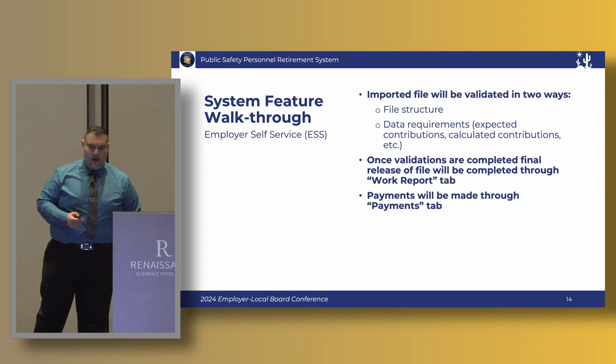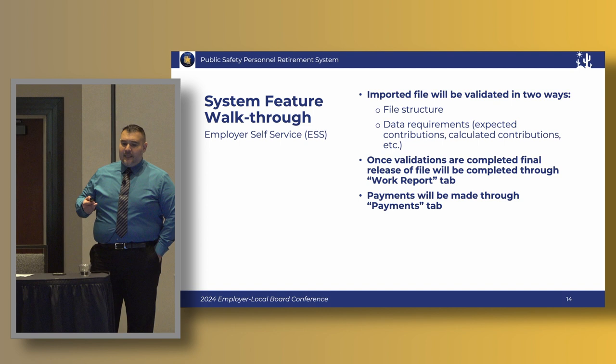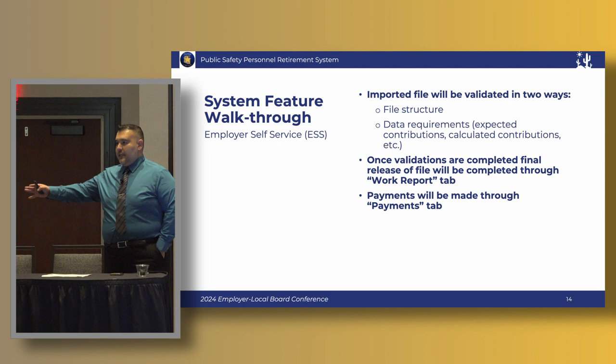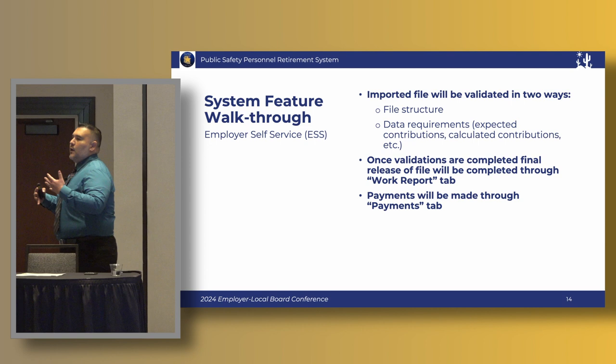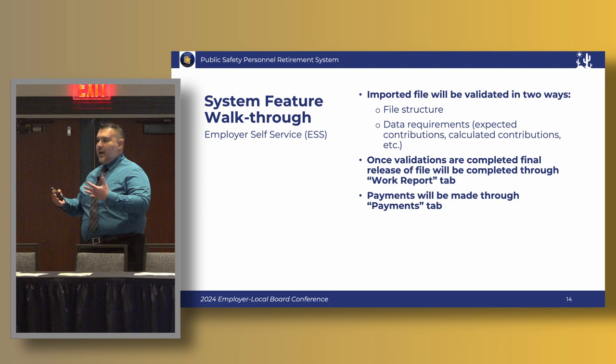Once all validations are complete, the final release of the file is completed through the work report tab. That means you validate your file, everything looks good, and it's released to the work reports tab where you can do the final validations. That's the area where you can go and do edits if you need to, addressing any validation issues that arise — all done through the work report tab. Then you make payments through the payments tab.